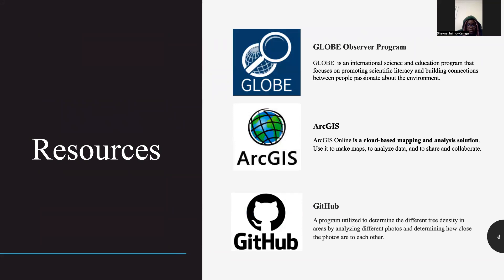The first tools we used for this project was the GLOBE Observer program, which focuses on building connections with people and their environments. GLOBE has two subdivisions that we used. The first was the Land Cover Observer tool, in which we were able to gather knowledge about the urbanization and land cover of Houston. The second tool we used was the Mosquito Mapper, which we used to get data about spatial distribution of mosquitoes in the context of Houston. ArcGIS is another tool we used in combination with the Mosquito Mapper, as it helped us get a map of the mosquito data in Houston. Finally, we used the JetHub program to analyze the land cover photos and determine the tree density.